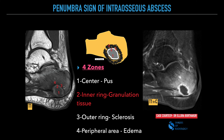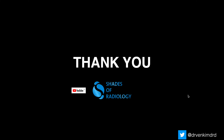This is a classic picture of intraosseous abscess with the penumbra sign, which is nothing but the T1 hyperintense inner ring indicative of granulation tissue, showing significant enhancement on post-contrast images. I would like to thank Dr. Ellora Borthakur for providing this excellent classic sign which is indicative of intraosseous abscess.